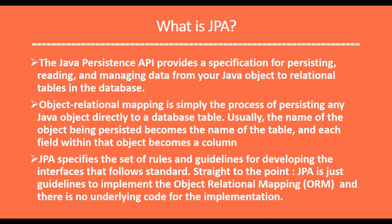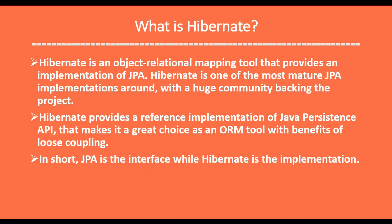Now let us see what is JPA. JPA stands for Java Persistence API, which provides a specification for persisting, reading, and managing data from your Java objects to the tables in a database. JPA is a kind of Object Relational Mapping technique, and it provides the setup rules and guidelines for developing interfaces that follow a standard. To keep it simple, JPA suggests the guidelines to implement ORM, but there is no underlying implementation for JPA.